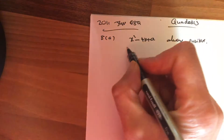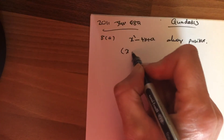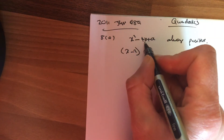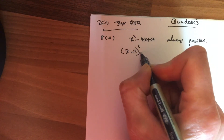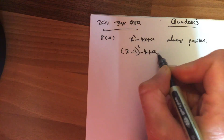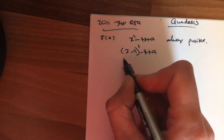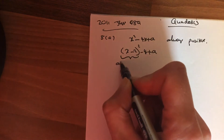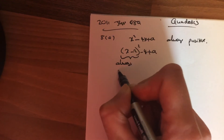Now, if you complete the square — a wee trick here — complete the square: half the middle, take that number away squared, and drop down the end. This is a squared number, so this always is positive.